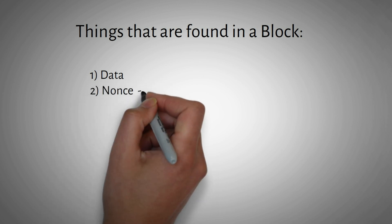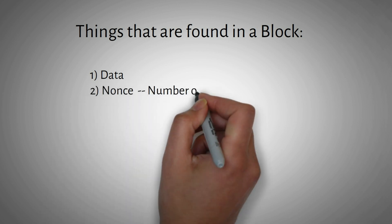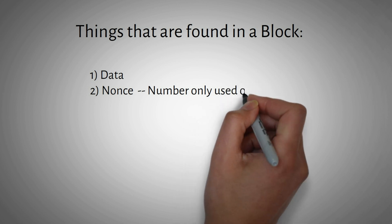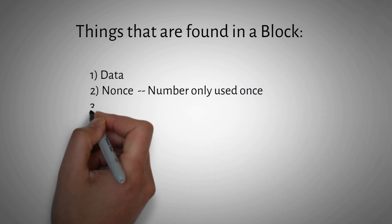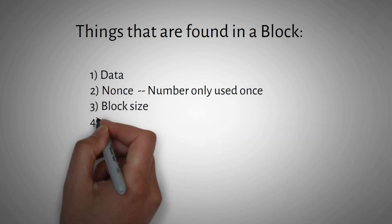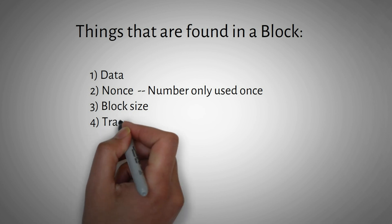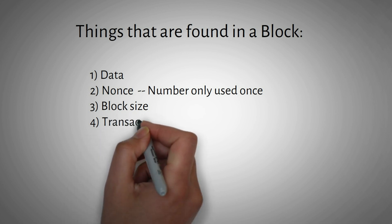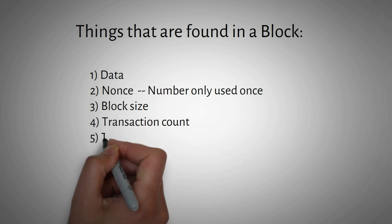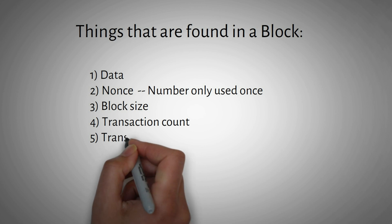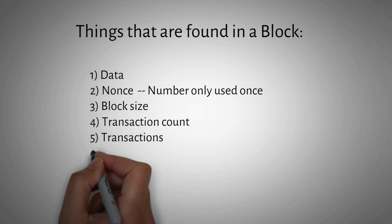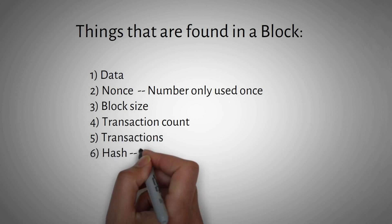The components of a block include: Data; a Nonce or magic number — a randomly generated number created when the block is generated; Block size — what information is stored in the block; Transaction count — how many transactions are stored in this block; and the Transactions themselves stored in the block.